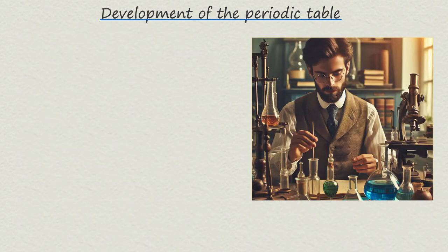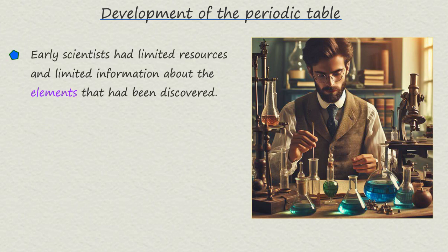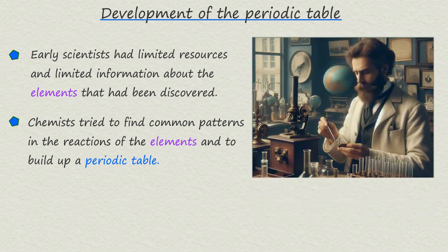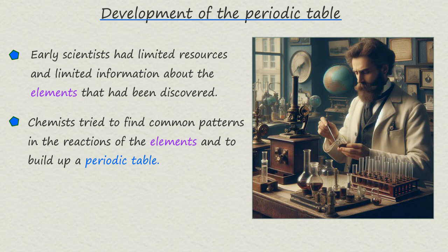It is important that you try to put yourself in the position of these early scientists and visualise the information and technology that was available to them at the time. New elements were being discovered all the time. They had limited information about these elements, some of which was correct and some, unfortunately, was incorrect. They knew nothing about protons, neutrons or electrons, or other ideas about the structure of atoms. Some of the elements in early periodic tables were in fact compounds, and lots of elements still had not yet been discovered. So it was no wonder it was proving difficult to find any pattern in how these elements react or how they might be grouped together.